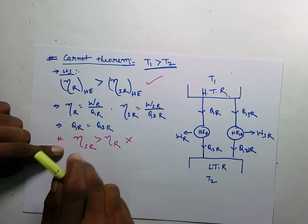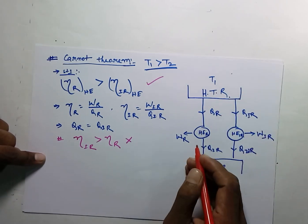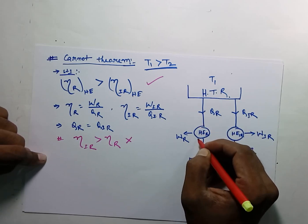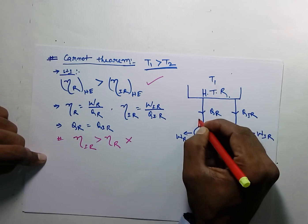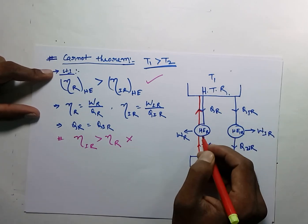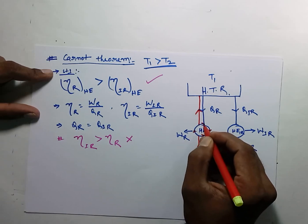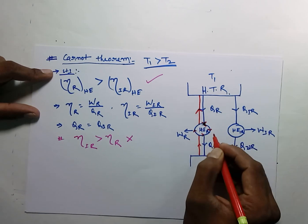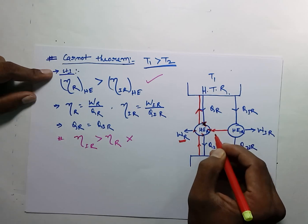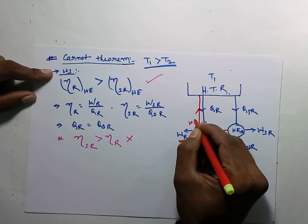By assuming these two things, let me remove the high temperature reservoir. This is a reversible heat engine, and it can also be operated in the opposite direction. Let me operate it in the opposite direction. As soon as it operates in the opposite direction, it needs to receive some work WR, because now this has become a heat pump.